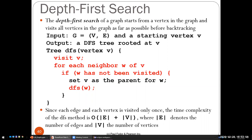Breadth first search is very similar, except that instead of recursion, it adds each unvisited neighbor w to a queue. It processes all children of the root before going to the next level — the grandchildren — ensuring level-by-level traversal.